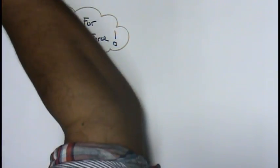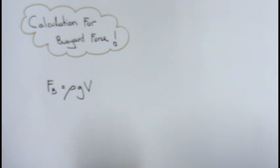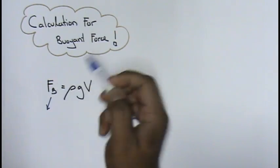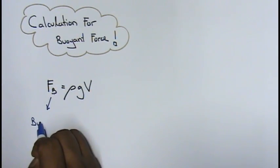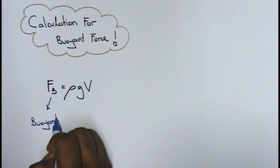Now FB basically stands for your buoyant force. The B is over here buoyant, F is for force, so FB over here is your buoyant force.